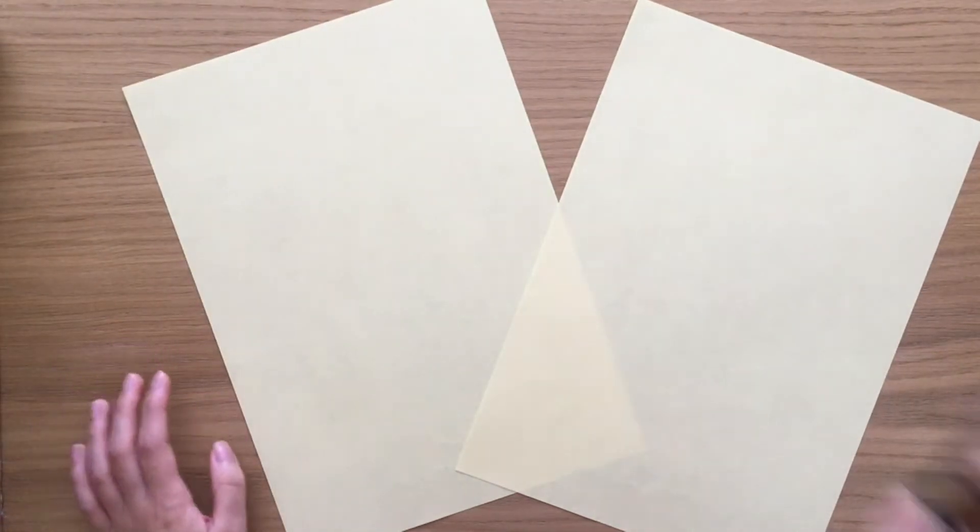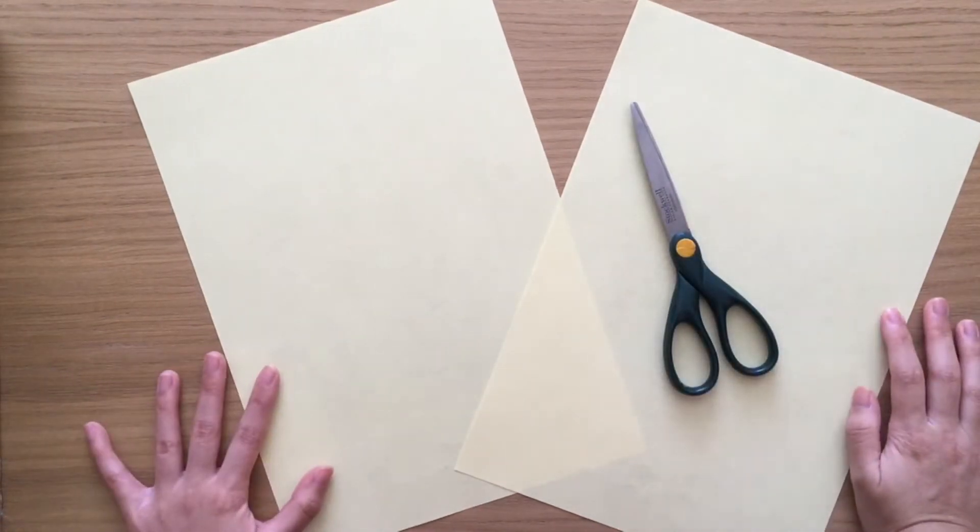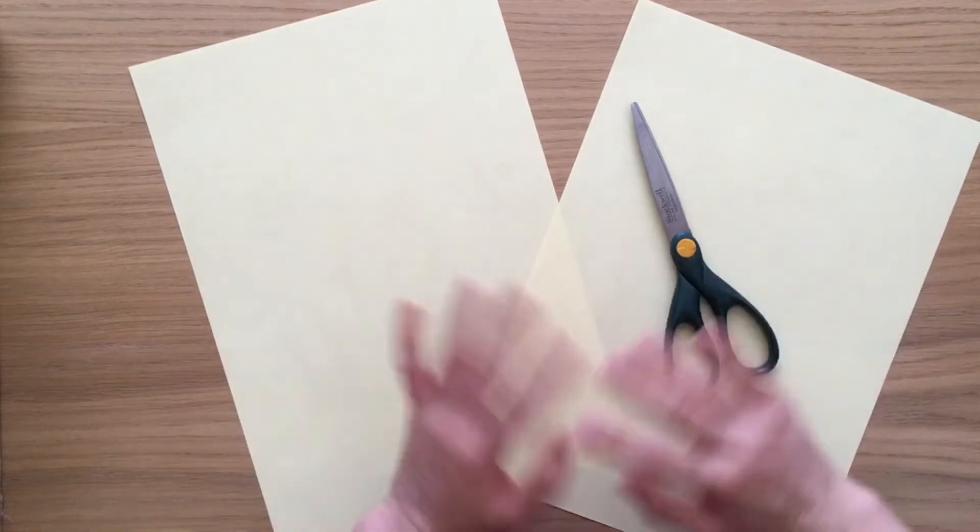To make your cat, all you'll need are two pieces of paper and a pair of scissors. I'm going to be using yellow paper to make mine, but you can use whatever paper you like.